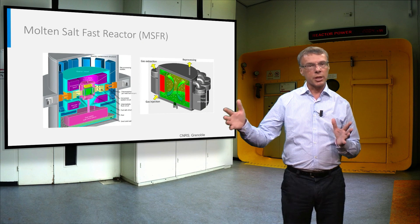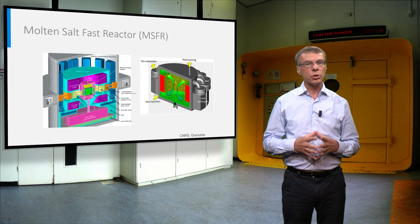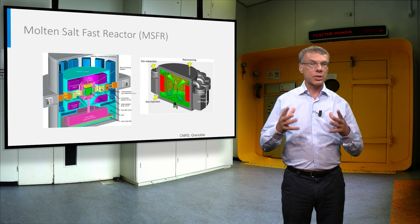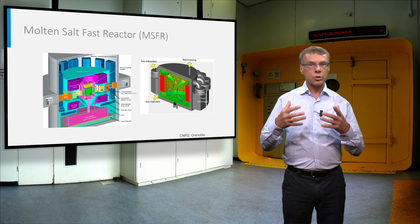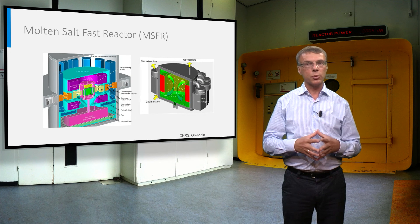Nowadays several European countries work together on the molten salt fast reactor, which has no graphite in the core. This reactor could also destroy the nuclear waste of current light water reactors.